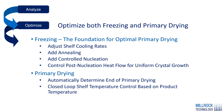Once you've analyzed your existing process, you can start to optimize both the freezing and primary drying portions of your protocol. This is extremely unique — most systems only focus on the primary drying side. However, with the technologies we provide, you can adjust your shelf cooling rates, add annealing, add controlled nucleation, and you can do something nobody else can do: control nucleation with what we call post-nucleation heat flow, where we actually control the crystal growth after nucleation.